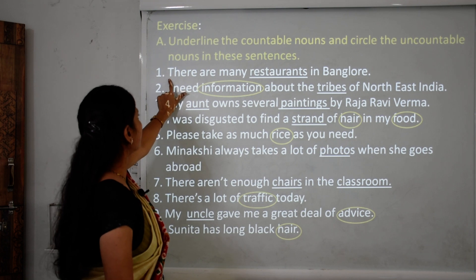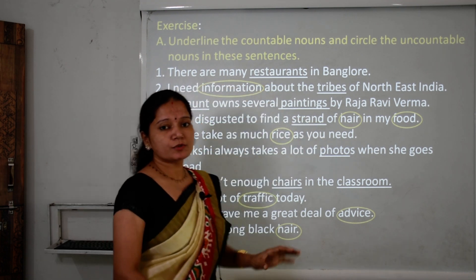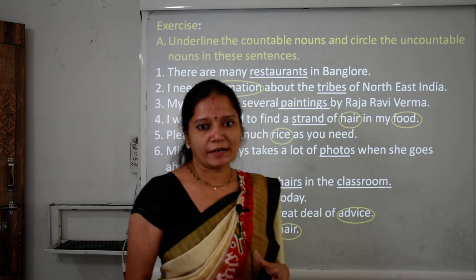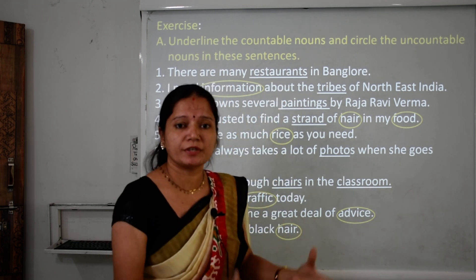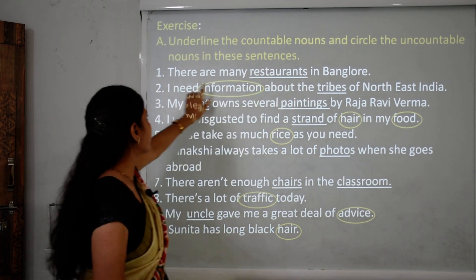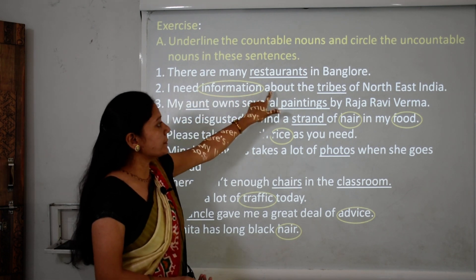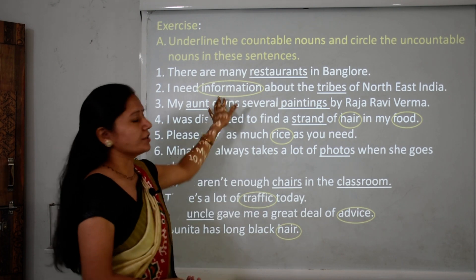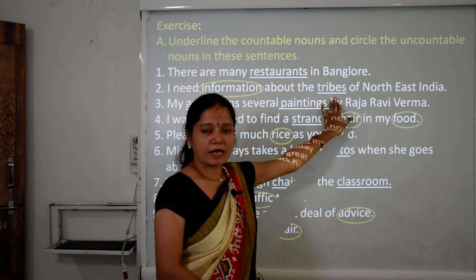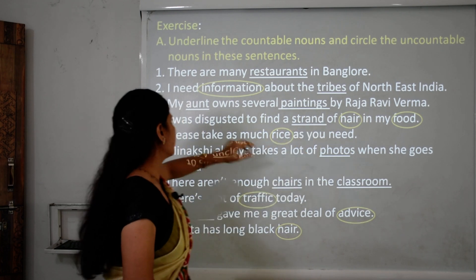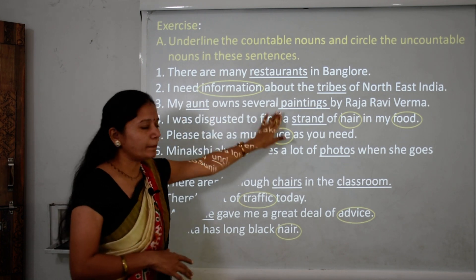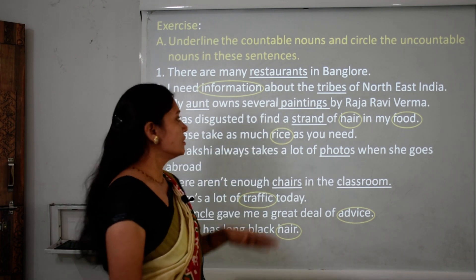Sentence 1: 'There are many restaurants in Bangalore.' Restaurants is a countable noun because we can count one restaurant, two restaurants, three restaurants — so I underlined it. Sentence 2: 'I need information about the tribes of Northeast India.' Information is uncountable — so I circled it. Tribes is countable — so I underlined it. Sentence 3: 'My aunt owns several paintings by Raja Ravi Verma.' Both aunt and paintings are countable nouns, so I underlined them.